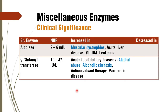Coming to the next enzyme, aldolase — aldolase is specific for muscular dystrophies. It is basically a muscle enzyme, so in case of muscular dystrophies you will find an increase in aldolase activity. Liver diseases, MI, diabetes mellitus, and leukemia will also show some rise in aldolase activity.